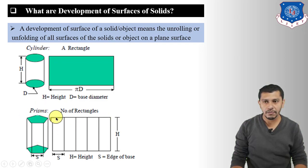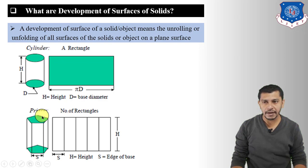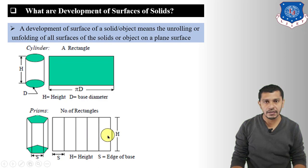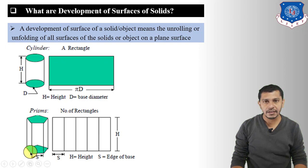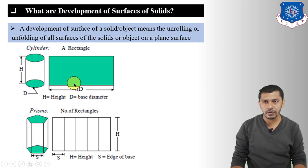The development of a prism will be a rectangle divided into a number of smaller rectangles, where each rectangle represents a rectangular face of the prism. For a pentagonal prism there will be 5 rectangles, for a hexagonal prism 6, and for a square prism 4. The width of each rectangle equals the length of its base edge, and the height equals the height of the prism. The development of cylinders and prisms is known as parallel development.